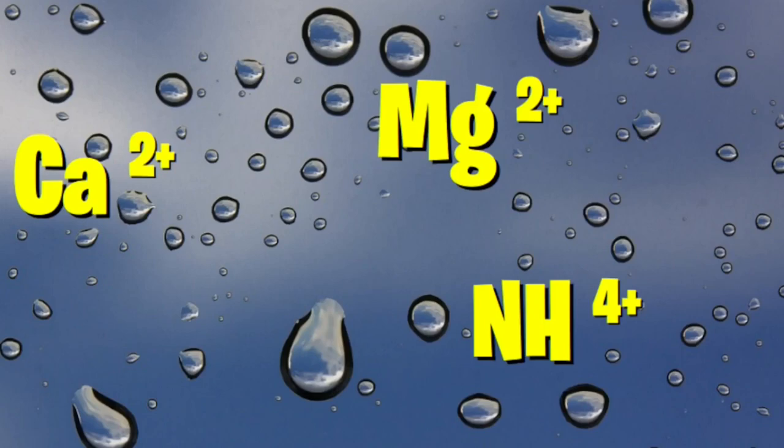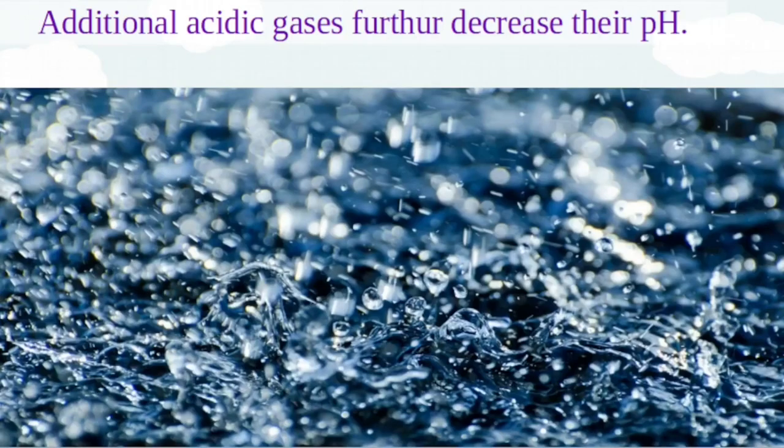In the absence of rain, dry deposition of acid may occur. In the droplets falling from the clouds, additional acidic gases and aerosol particles get incorporated, further decreasing their pH.